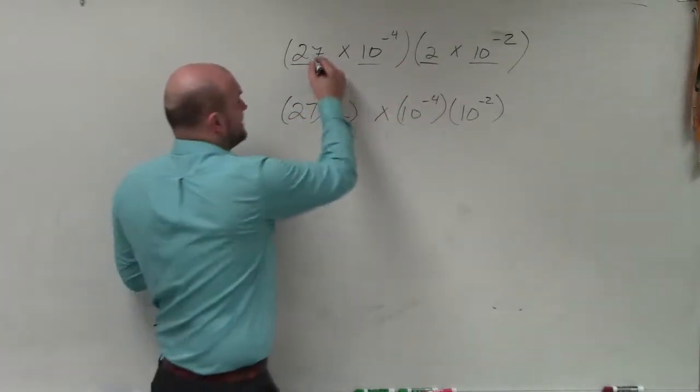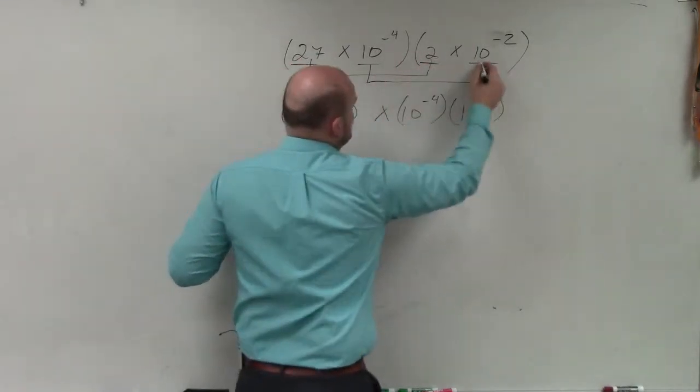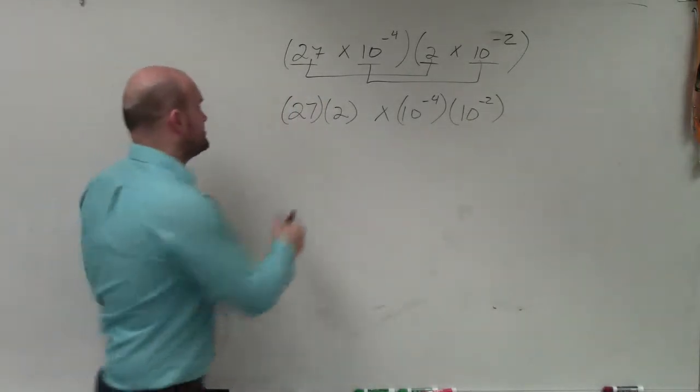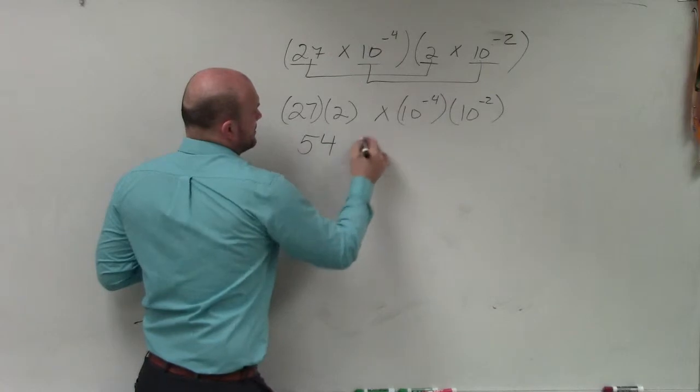Multiply your first numbers, and then you multiply your powers of 10. 27 times 2 is 54 times 10.